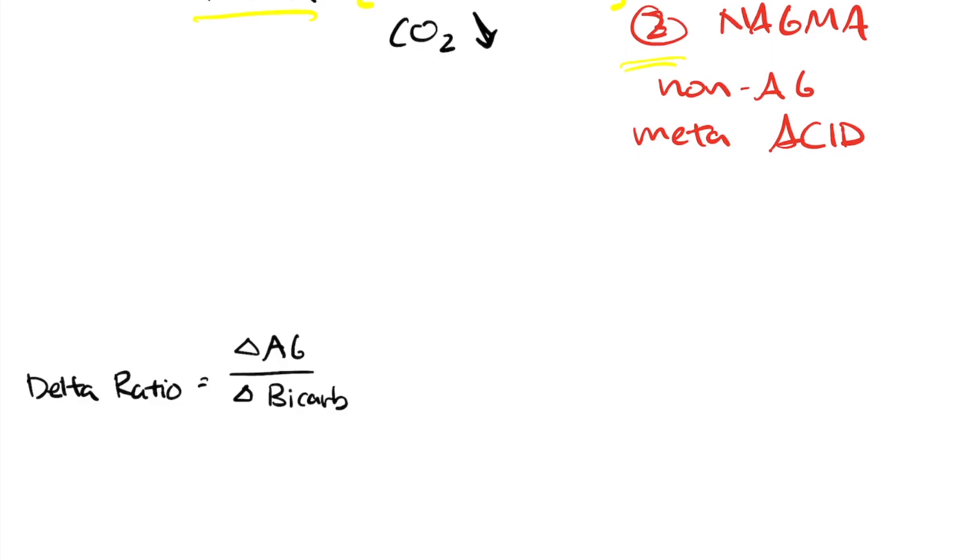The delta ratio is the delta anion gap over the delta bicarb. And by delta, what it means is the difference between the expected anion gap and the actual anion gap. In this case, our expected anion gap is going to be 12. So it's going to be the actual anion gap minus 12 over,